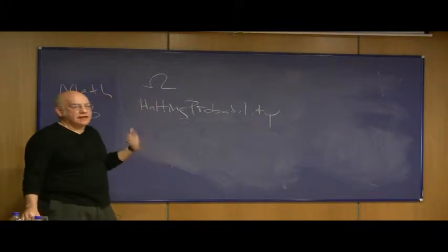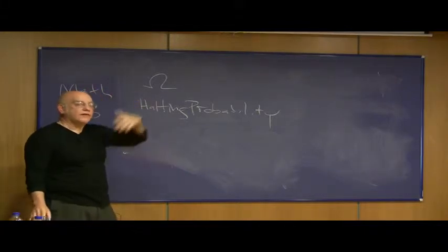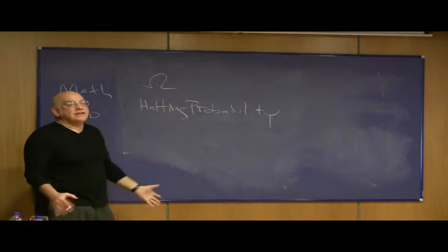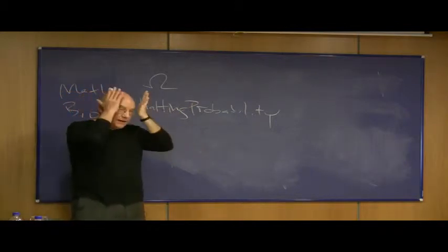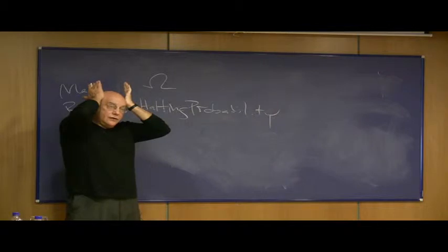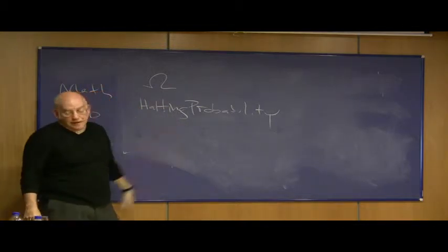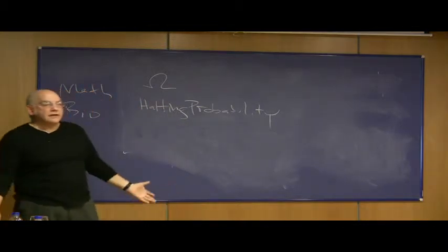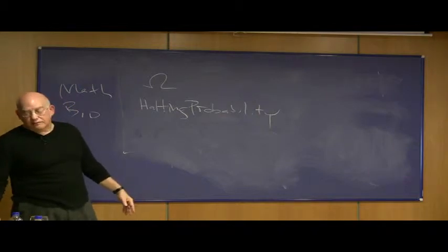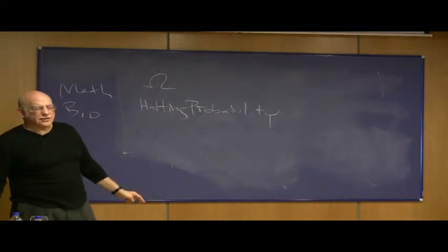There is no algorithm to decide if a self-contained computer program will go on forever or will eventually stop. If it does stop, you run it, and you've discovered it stopped. But how can you be sure that it'll never stop? And Turing proves in his 1936 paper, that there is no algorithm, using Cantor's diagonal argument, he proves there's no algorithm to decide in general.